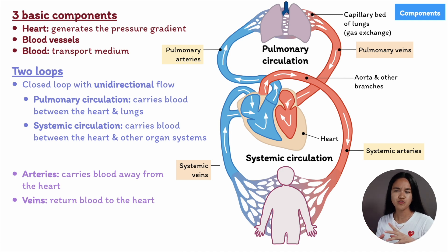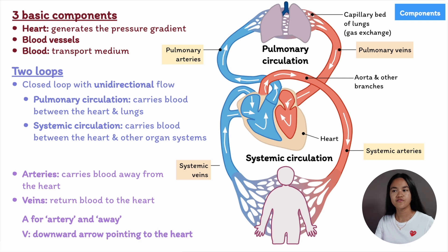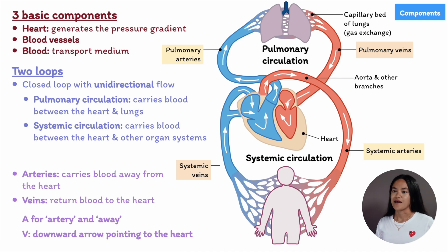A memory tip: 'A' for artery and 'away' from the heart. For veins, the letter V looks like a downward arrow, which signifies blood returning to the heart.